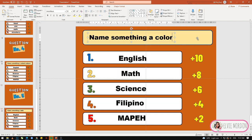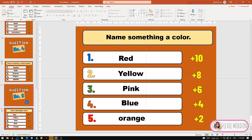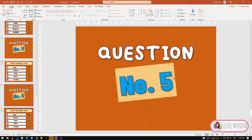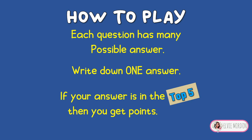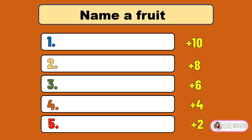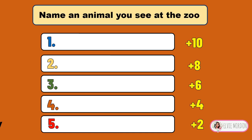Name something a color. Name a subject in school. Name an animal. Pag okay na, pwede na nating i-slideshow para makita natin — Game Quiz Top 5. How to play? Each question has many possible answers. Write down one answer. If your answer is in the top 5, then you get points. Yan yung mechanics natin sa games. Question number 1 — name a fruit. Pag nag-answer sila at tama yung answer nila, for example orange — plus 2 sila; banana — plus 4; mango — plus 6; grapes — plus 8; apple — plus 10.